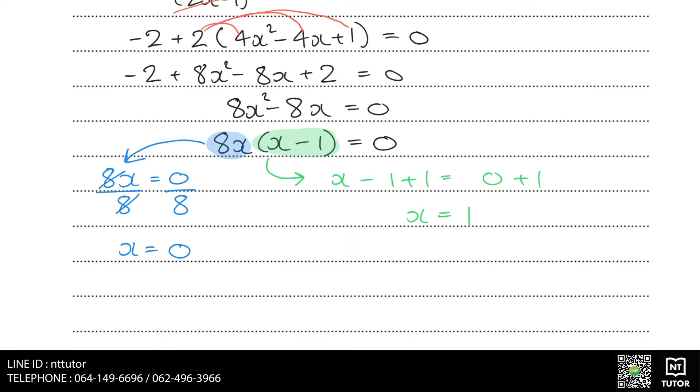After solving this, we get two answers for x: x equals 0 and x equals 1. This means that the x coordinates corresponding to the stationary points are 0 and 1.